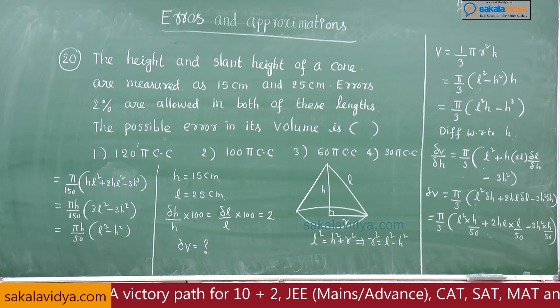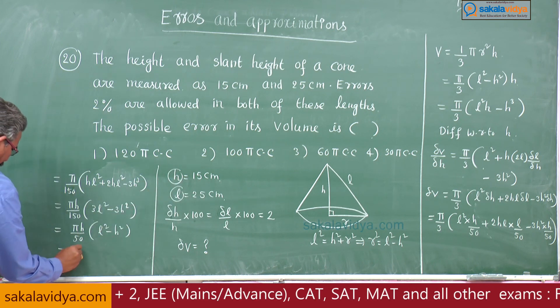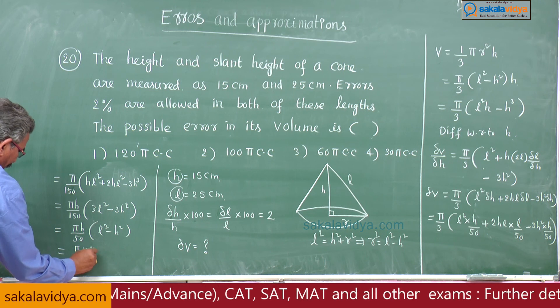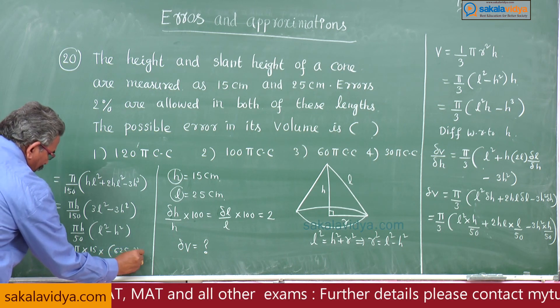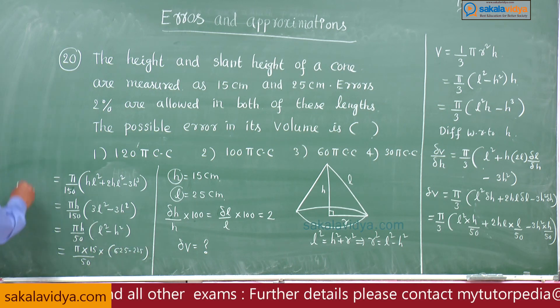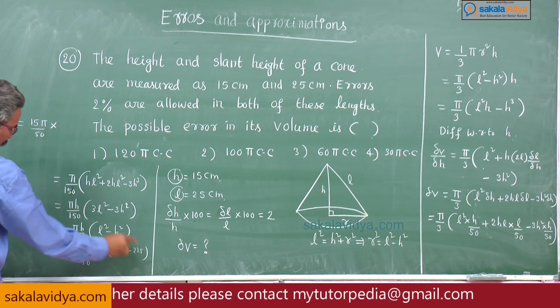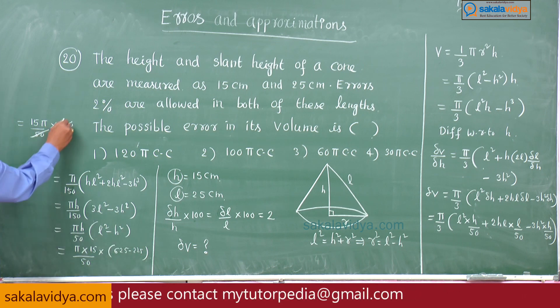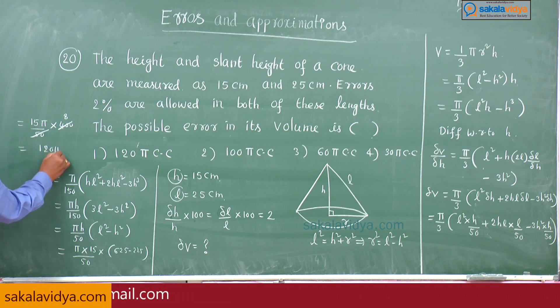Substituting l value and h value, these two values: π into h is 15 by 50 into l square, l square is 625 minus 225. This is 15π by 50 into this will be 400. So this is 120π cc, which is the right option. First option will be the right option.